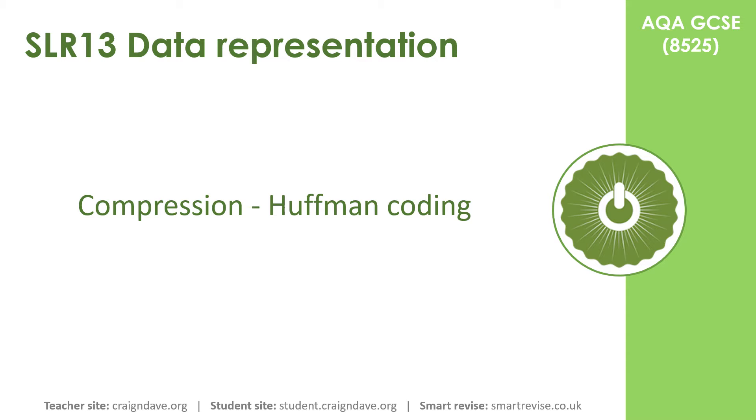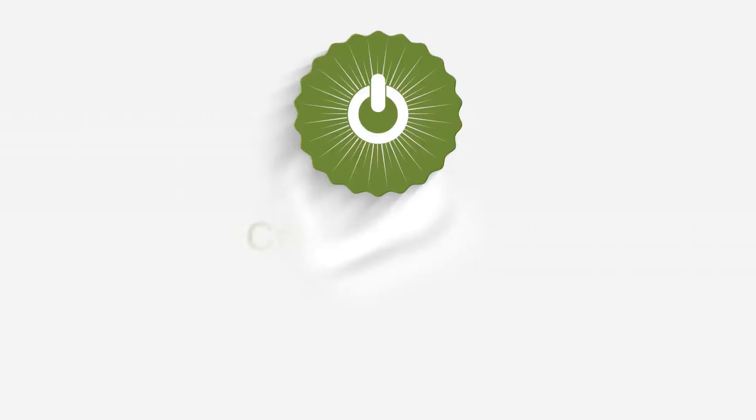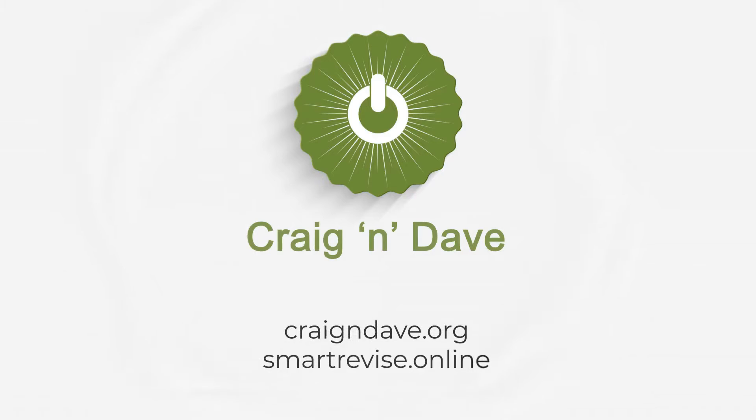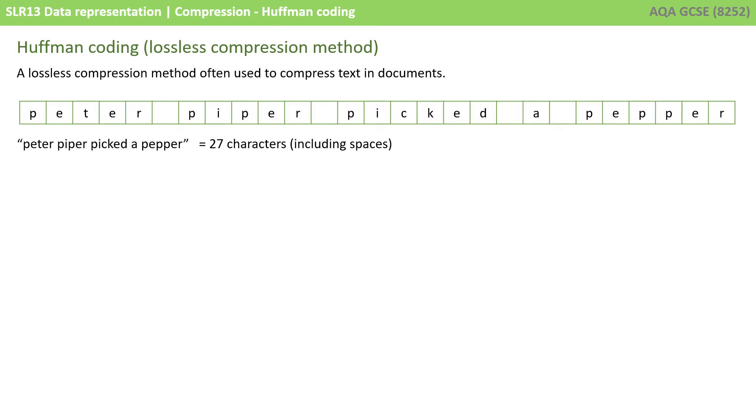In this video, we take a look at one method of compression that you need to know about for the exam, and that's called Huffman coding. Huffman coding is a lossless compression method, and we often use it to compress text documents. Let's take a simple phrase here, which is Peter Piper picked a pepper. That text phrase, including spaces, is 27 characters.